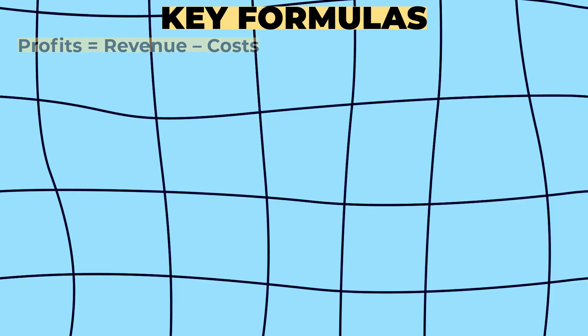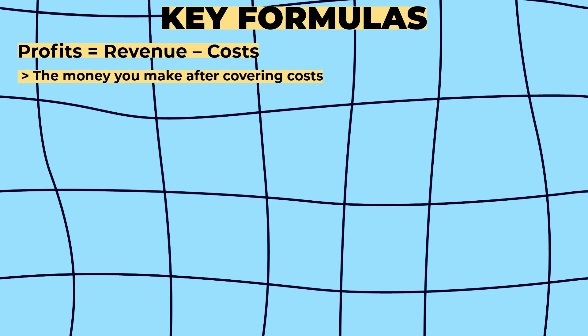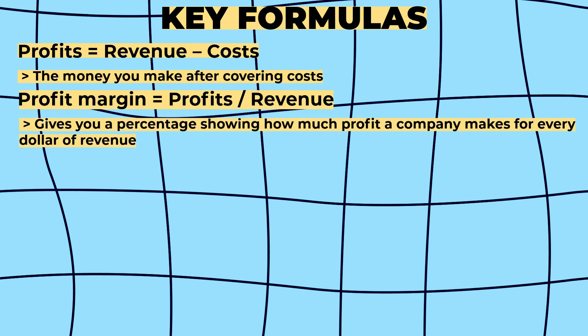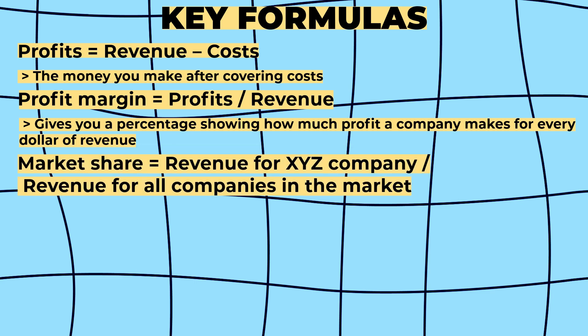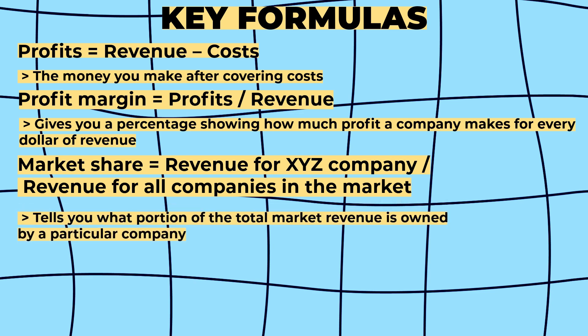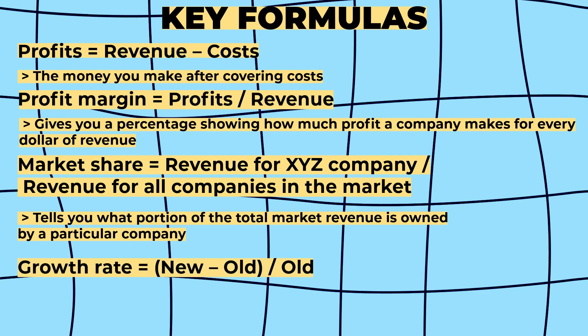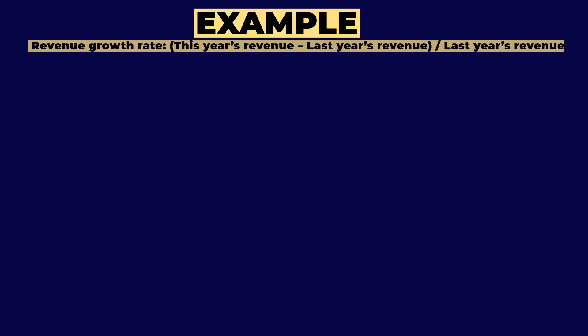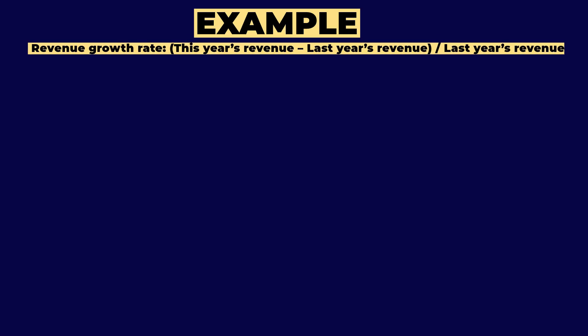Here are the key formulas you need to know. Profits = Revenue − Cost. Profit Margin = Profits ÷ Revenue — this gives you a percentage showing how much profit a company makes for every dollar of revenue. Market Share = Revenue for XYZ Company ÷ Revenue for all companies in the market. Growth Rate = (New − Old) ÷ Old — for example, Revenue Growth Rate = (This Year's Revenue − Last Year's Revenue) ÷ Last Year's Revenue.